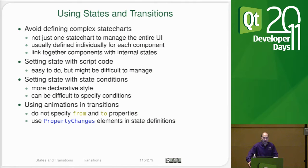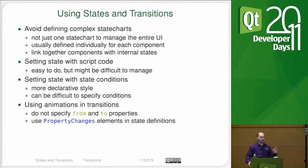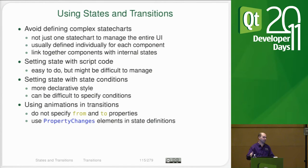Some tips when using states and transitions: you can't do really complex things, so try to keep them simple. You should only be in one state at any given time — don't try to do parallel states, though you can simulate that by having different state machines on different items. You can set states with code by directly setting the state variable, but think about whether you could have just used a when clause instead — when clauses are very good for things like whether a button is pressed or not.